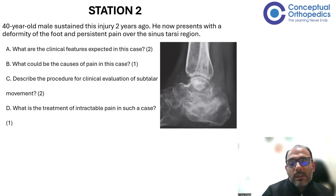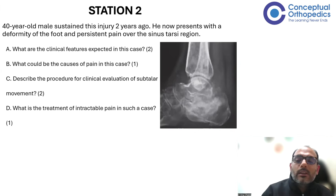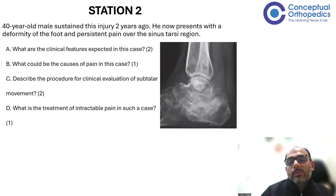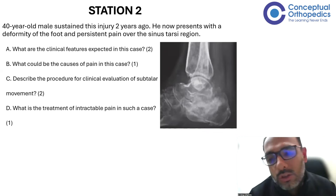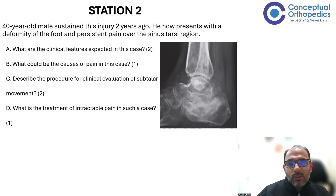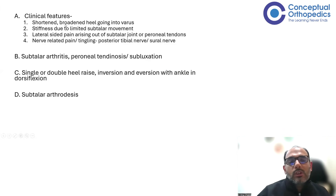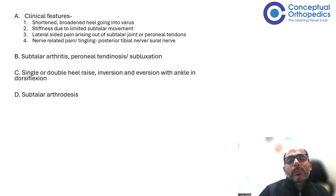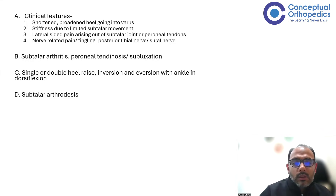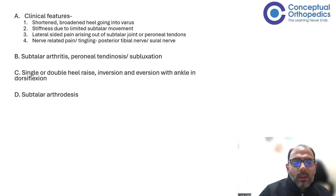What is the treatment of intractable pain in such a case? The treatment is subtalar arthrodesis. Depending upon the cause of symptoms, you can expand further: you can do an exostectomy of the lateral wall, a subtalar arthrodesis, and in cases of anterior ankle impingement, a distraction bone block subtalar arthrodesis. To summarize the answer key: clinical features include a shortened, broadened heel in varus, stiffness due to limited subtalar movement, lateral-sided pain from the subtalar joint or peroneal tendon, and nerve-related pain or paresthesias in the posterior tibial or sural nerve. Causes of pain include subtalar arthritis, peroneal tendinopathy, subluxation, or tendon impingement. Subtalar joint assessment includes single or double heel raise test and inversion/eversion assessment.